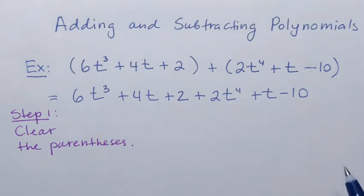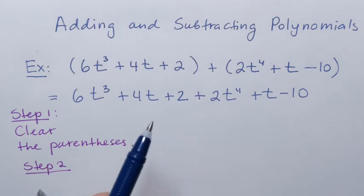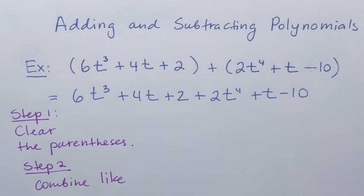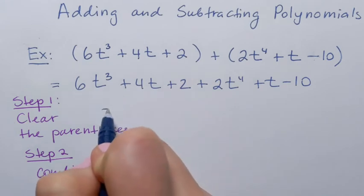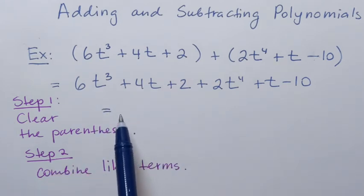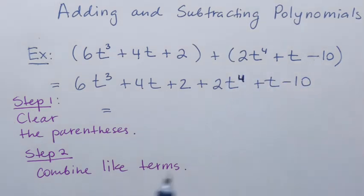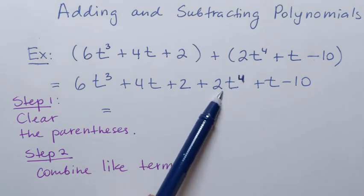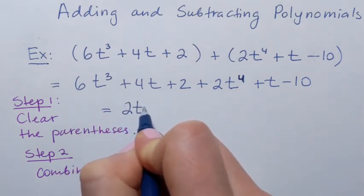And then I'll need to combine like terms — that's step two: combine like terms. So let's see which terms are like terms. What is the term with the highest degree? That's t to the fourth power — the fourth power is the highest one. Do I have any like terms for that? I don't have any other t to the fourth power, so I'm just going to rewrite it.